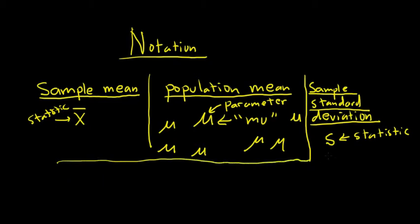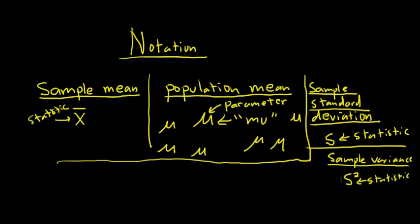Then we have the sample variance. And the sample variance would just be s squared, right? And this is also a statistic. So if you take the square root of s squared, you just get s, right? So the square root of the variance is the standard deviation.